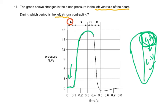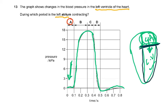When the pressure rises and then starts to fall, that is when the ventricle is emptying. The left atrium contracts, blood enters the ventricle, the bicuspid valve closes, and then the left ventricle contracts, pressing on the blood and pushing it into the aorta.